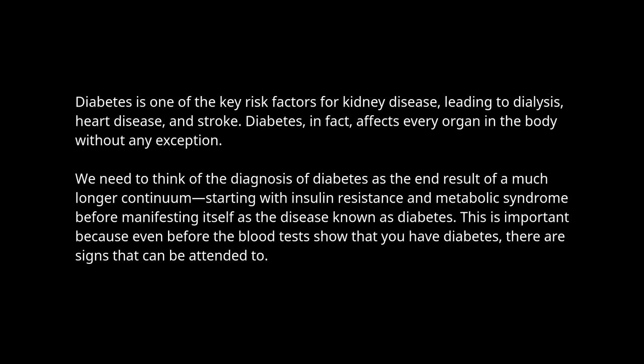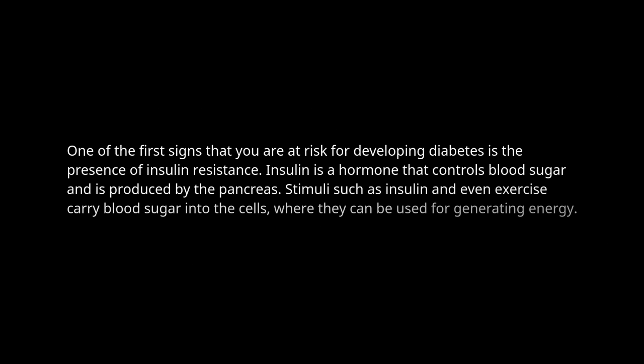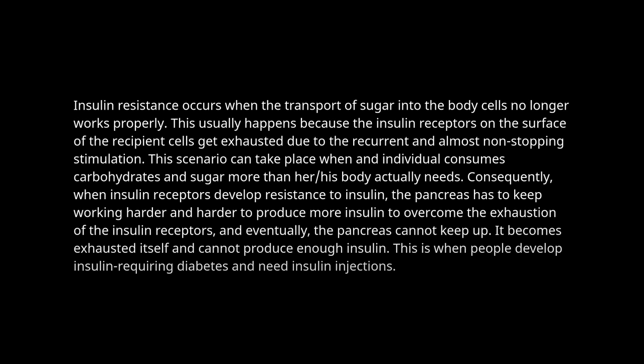Even before blood tests show that you have diabetes, there are signs that can be attended to. One of the first signs that you are at risk for developing diabetes is the presence of insulin resistance. Insulin is a hormone that controls blood sugar and is produced by the pancreas. Stimuli such as insulin and even exercise carry blood sugar into the cells, where they can be used for generating energy. Insulin resistance occurs when the transport of sugar into the body cells no longer works properly, usually because the insulin receptors on the surface of the recipient cells get exhausted due to recurrent and almost non-stopping stimulation. This can take place when an individual consumes carbohydrates and sugar more than their body actually needs.